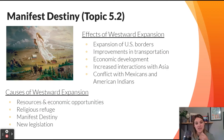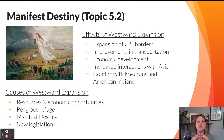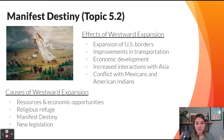Manifest Destiny is our first lesson topic for Period 5 and a major term to know. It's the idea that the U.S. should move west, obtain lands, and control territory from sea to shining sea — that it is the fate, the destiny of the U.S. to do so.